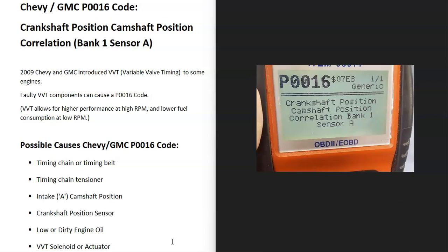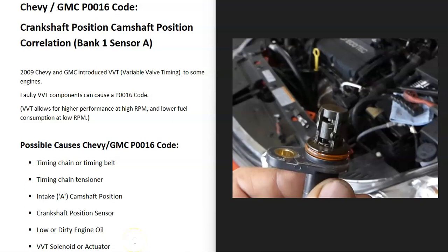What does this mean? There are sensors located at the crankshaft and the camshaft that report their location as they spin. This is used for timing, and the onboard computer is seeing an issue with these — that they're off, that they're not lined up correctly. So it's going to require troubleshooting to know why.